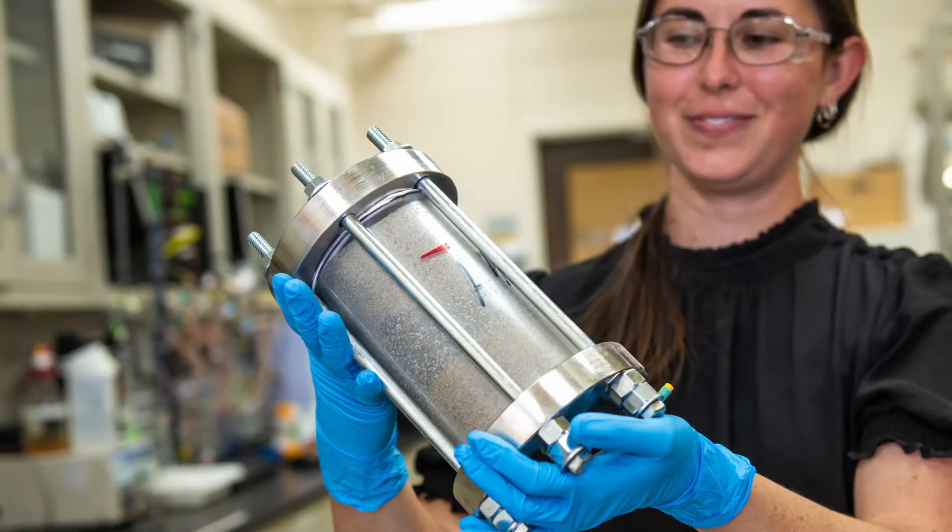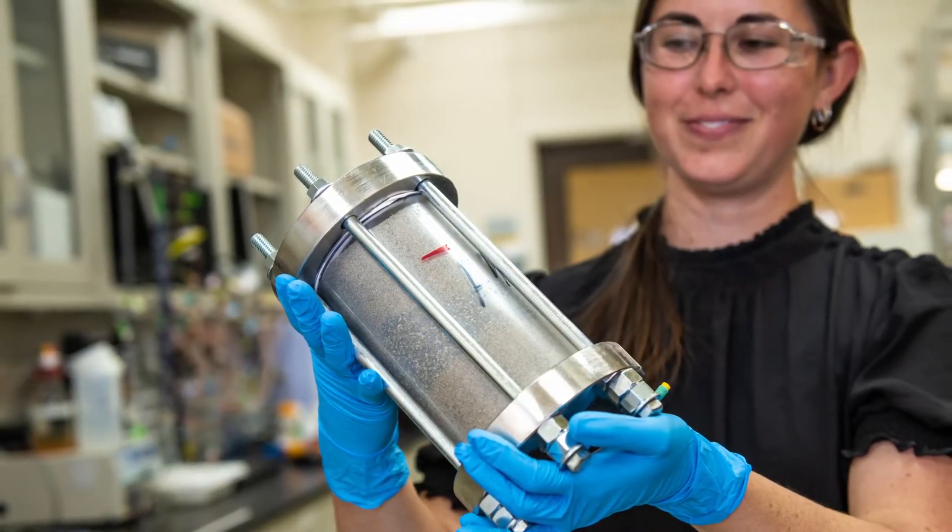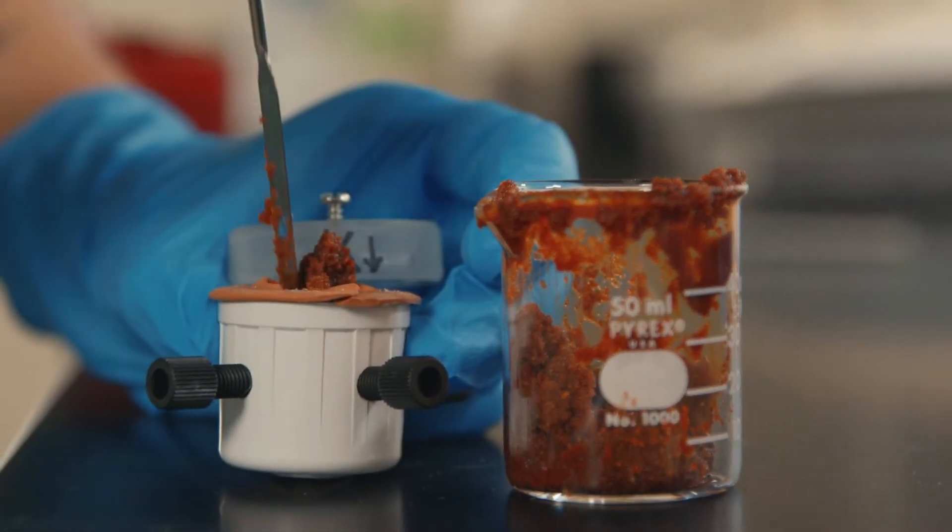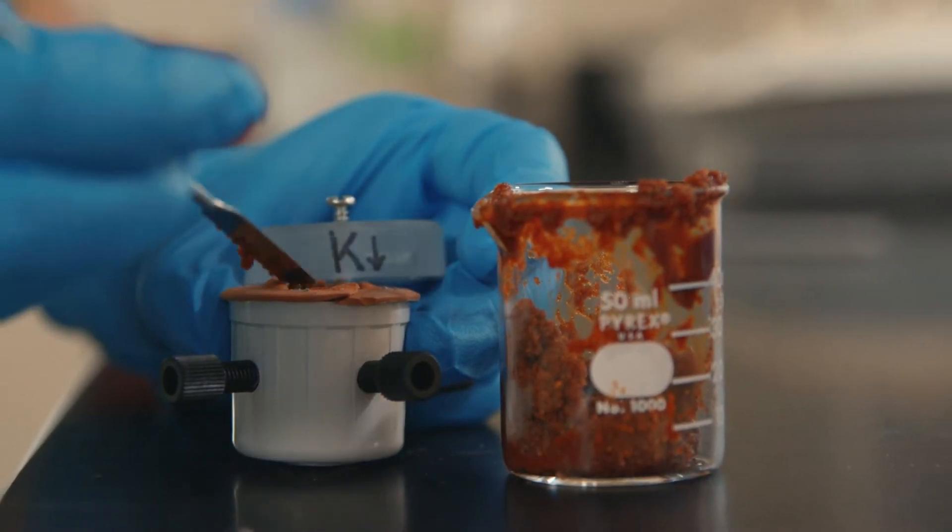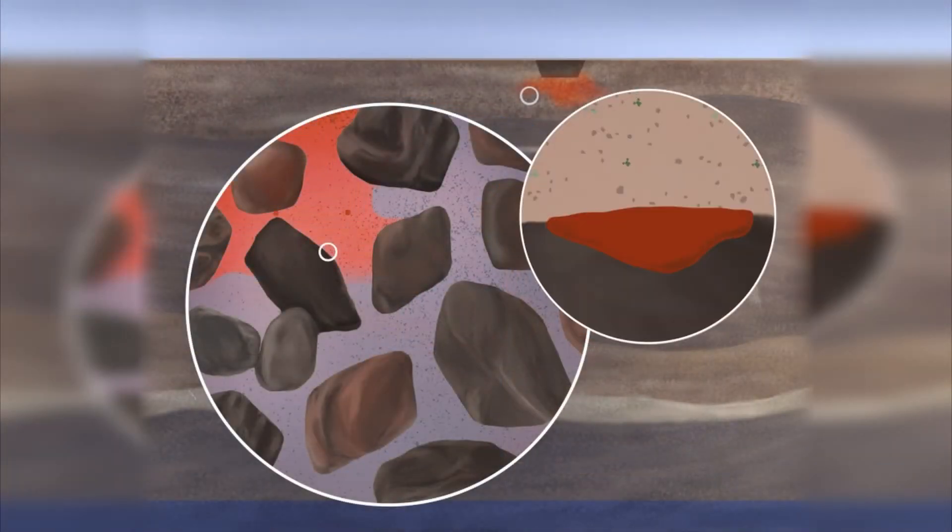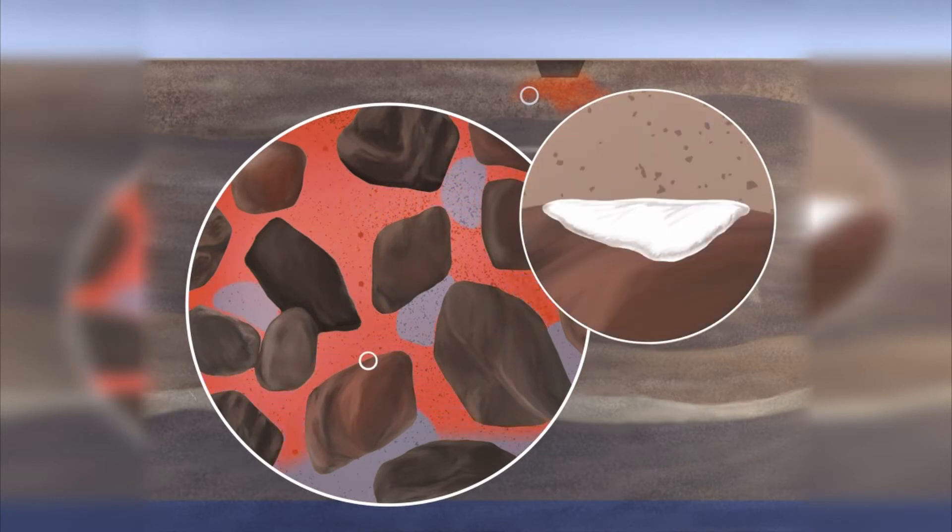Moving up in scale, we use batch and column experiments and sequential extractions, adding solutions ranging from groundwater to acids and heat to soil samples. This shows us what fraction of contaminants move with the flow of groundwater, if they are slowed down by interaction with soils, or if they are likely to remain bound in soils.